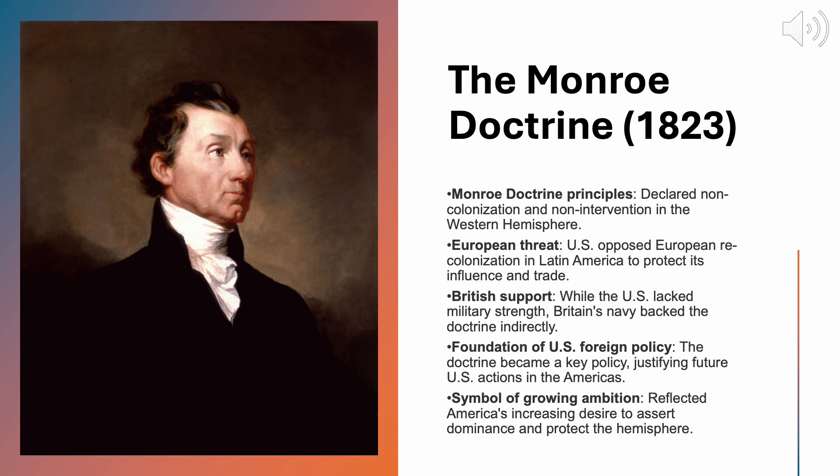Another important diplomatic development of that time was the Monroe Doctrine. Announced in 1823, it marked a defining moment in the early development of American foreign policy. It was a bold declaration that asserted the United States' growing confidence on the global stage and its desire to protect the Western Hemisphere from European interference. The doctrine emerged in response to independence movements sweeping across Central and South America, as former Spanish and Portuguese colonies sought to break free from European control. These Latin American revolts alarmed European powers, particularly Spain, which sought to reassert control over its former territories.